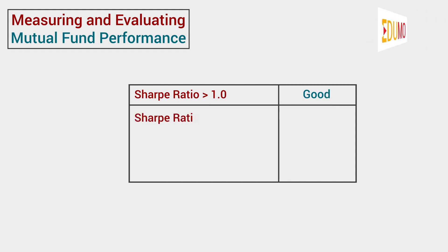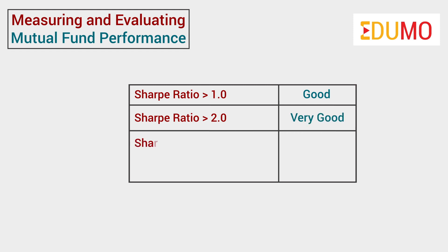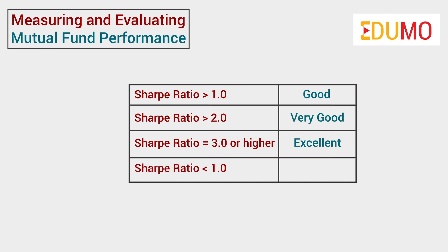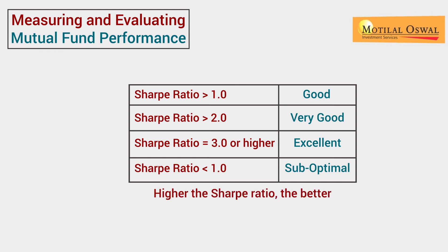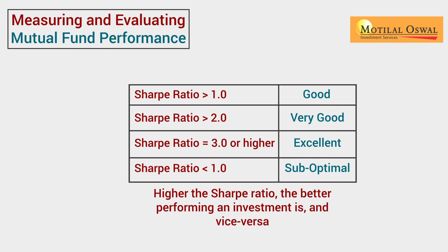A Sharpe ratio greater than 1.0 is considered acceptable to good by investors. A ratio higher than 2.0 is rated as very good. A ratio of 3.0 or higher is considered excellent. A ratio under 1.0 is considered suboptimal. The higher the Sharpe ratio, the better performing an investment is, and vice versa.